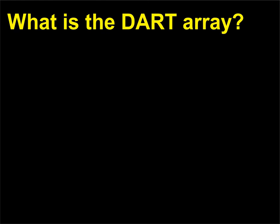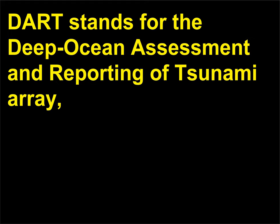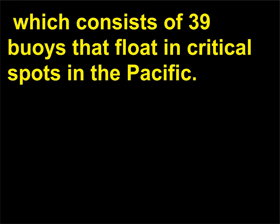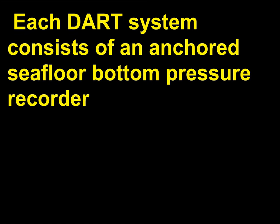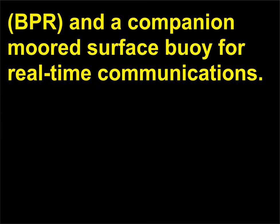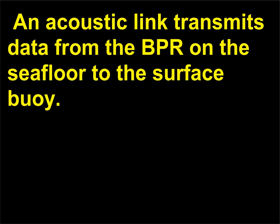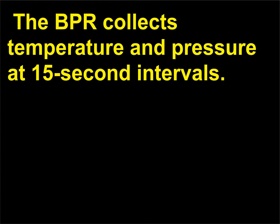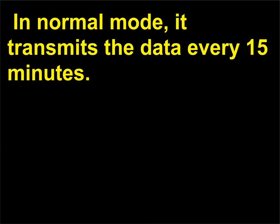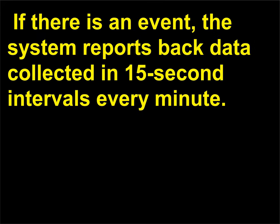What is the DART Array? The DART Array consists of 39 buoys that float in critical spots in the Pacific. Each DART system consists of an anchored seafloor bottom pressure recorder (BPR) and a companion surface buoy for real-time communications. An acoustic link transmits data from the BPR on the sea floor to the surface buoy. The BPR collects temperature and pressure at 15-second intervals. In normal mode, it transmits the data every 15 minutes. If there is an event, the system reports back data collected in 15-second intervals every minute.